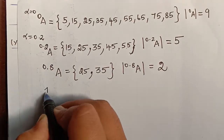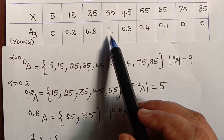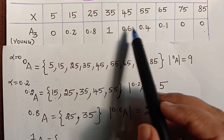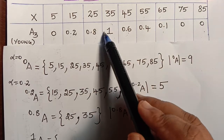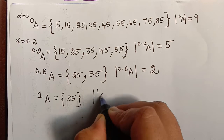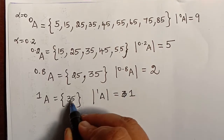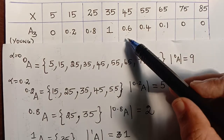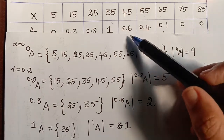For alpha equal to 1, the cut set contains elements with membership grade greater than or equal to 1. Since membership values only go up to 1, only element 35 with grade 1 falls into this set. Therefore the modulus of the 1-cut is 1. Similarly, we evaluate for the remaining alpha values 0.6, 0.4, and 0.1 to find all level sets.